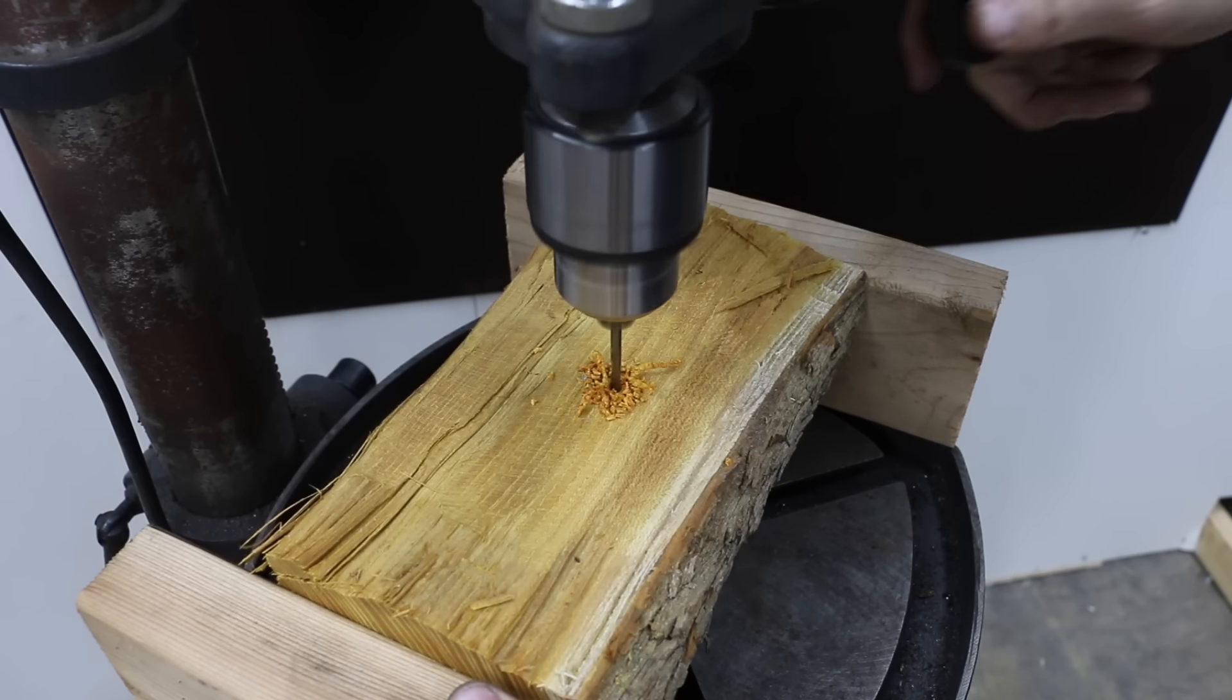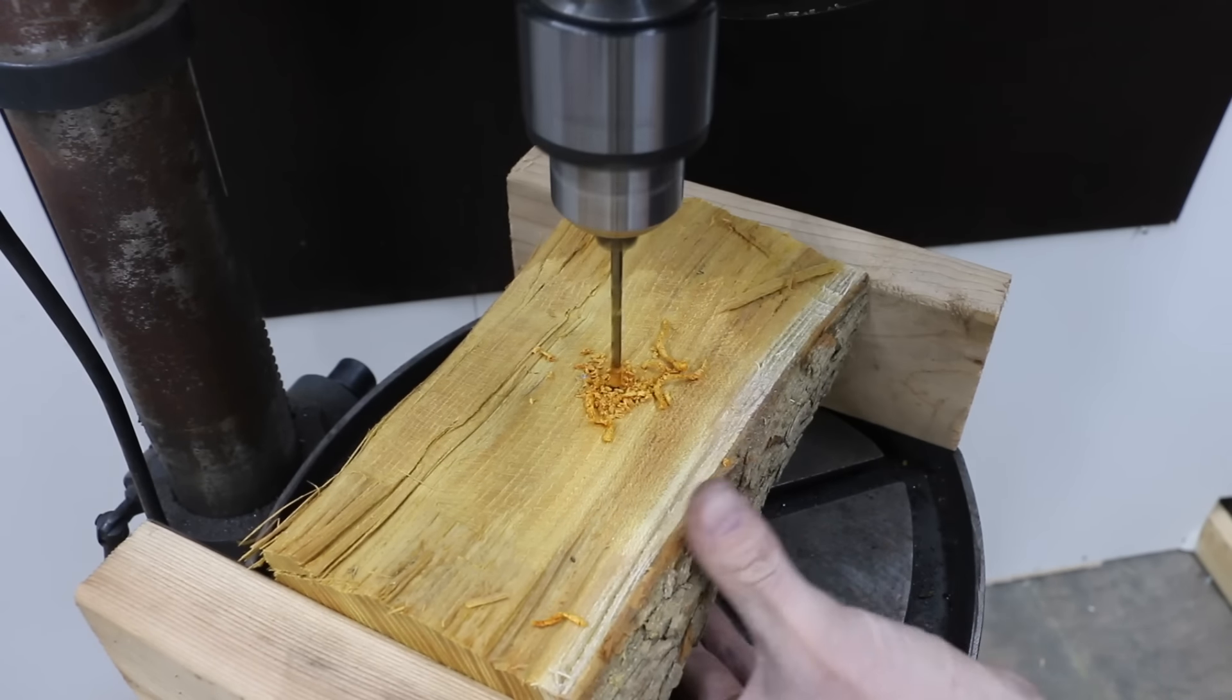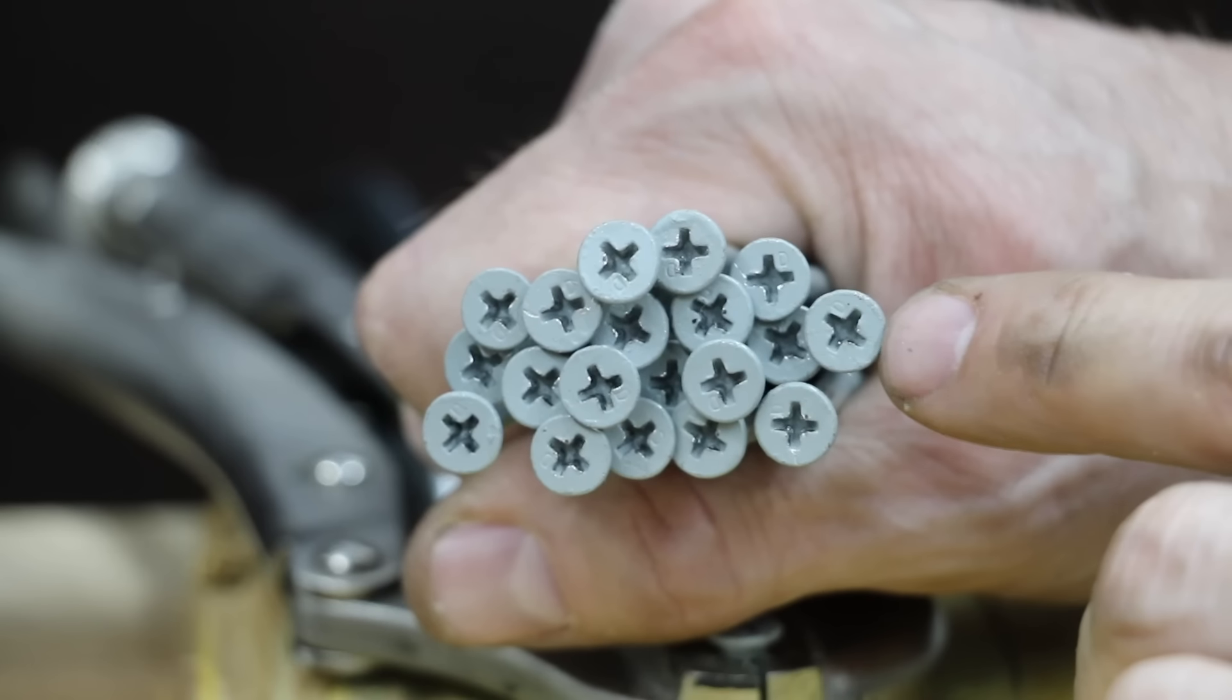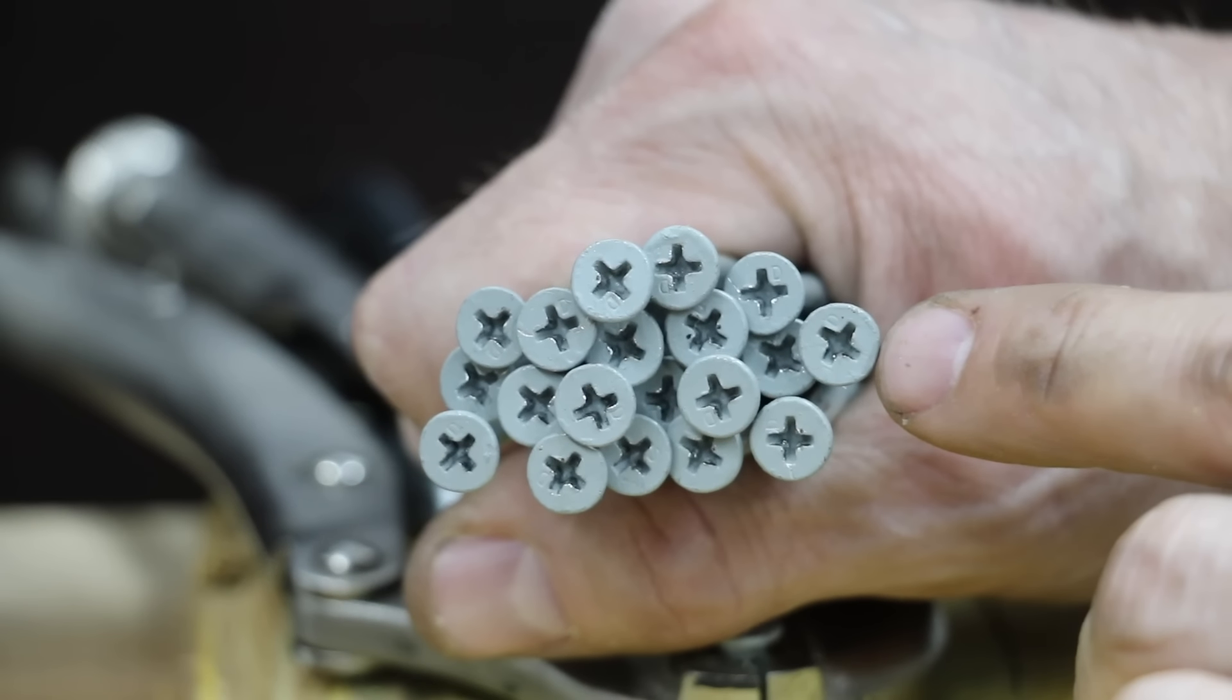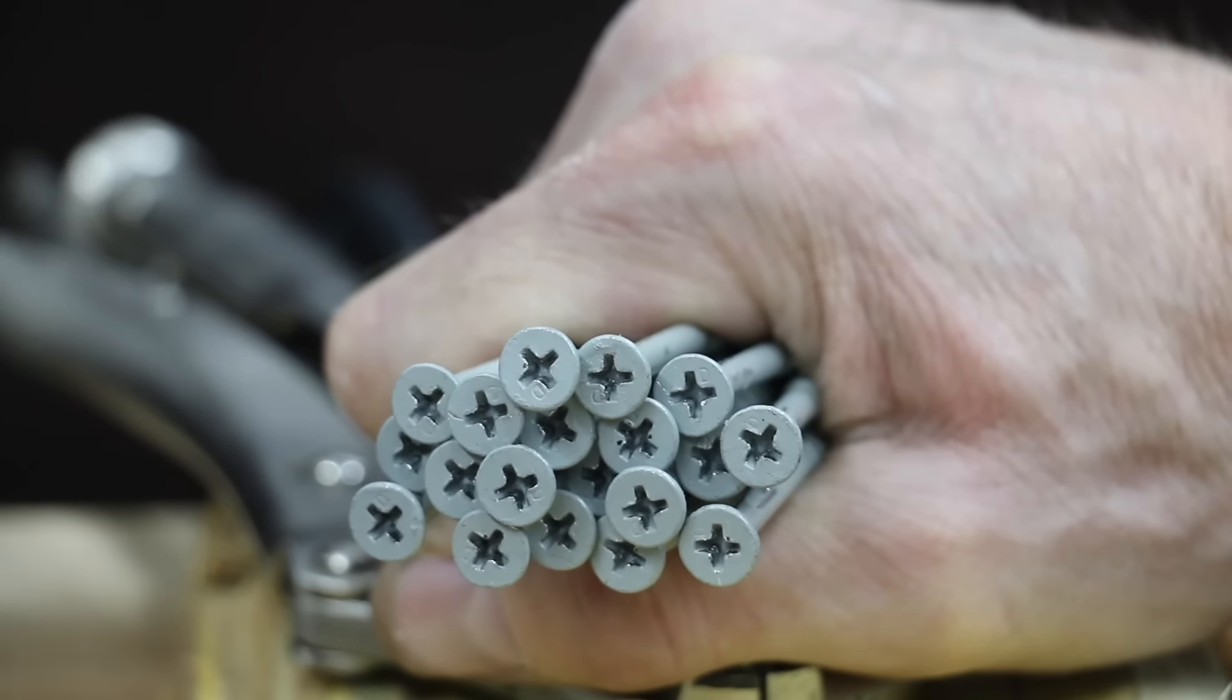I drilled a pilot hole in a piece of cured Osage orange, also known as hedge apple. I removed and installed a new screw between each test. I had to switch brands of screws since the original drywall screws along with several other brands were just too brittle and broke.